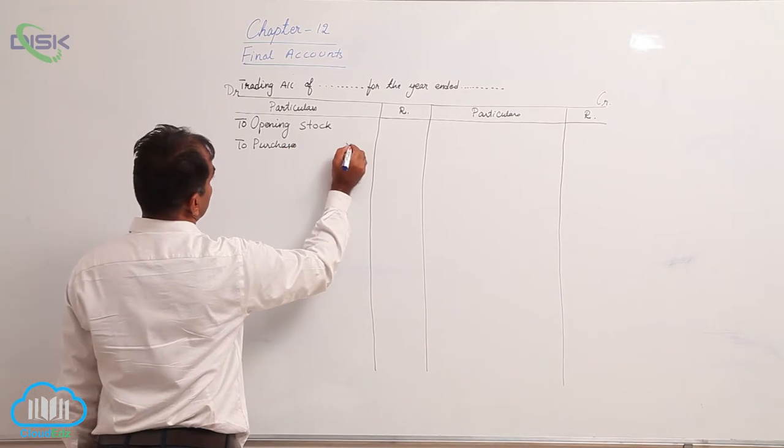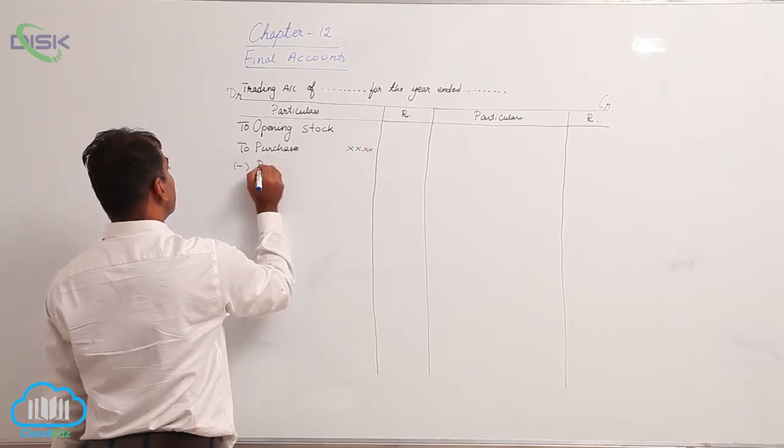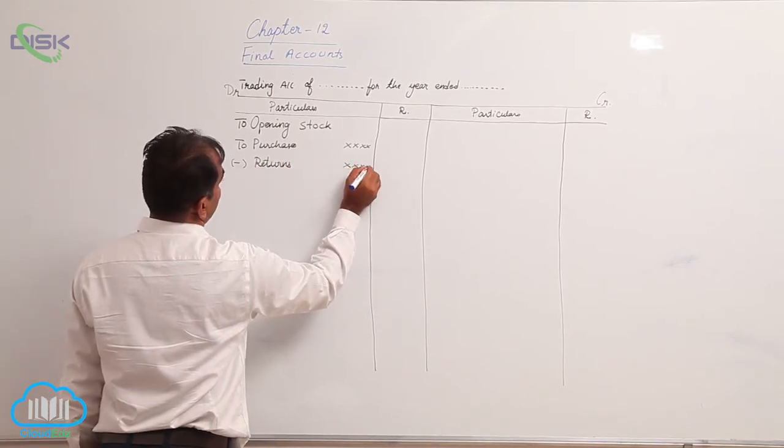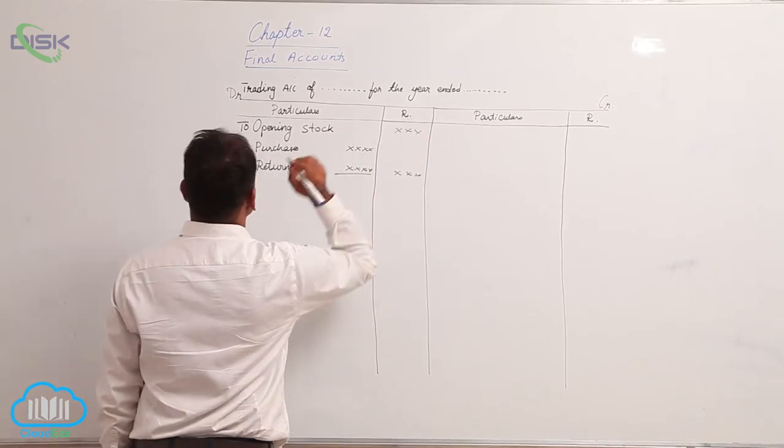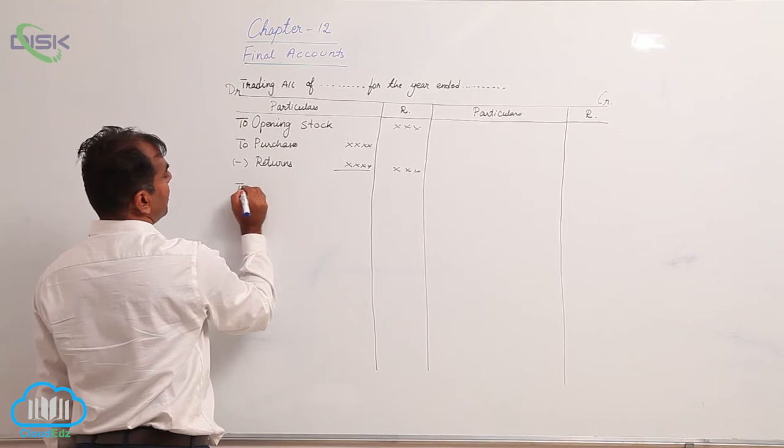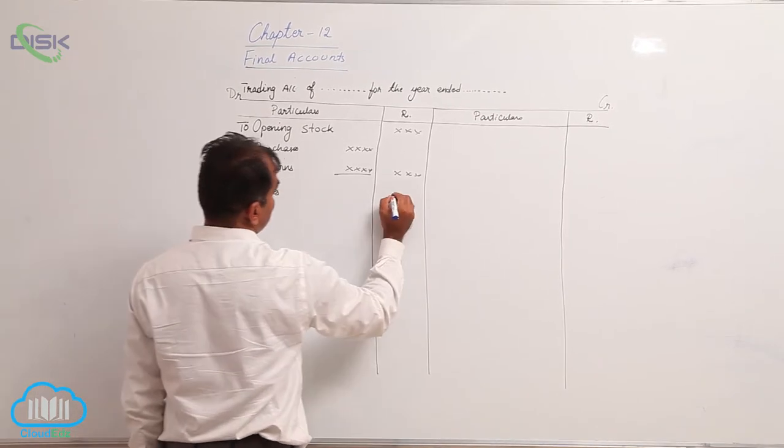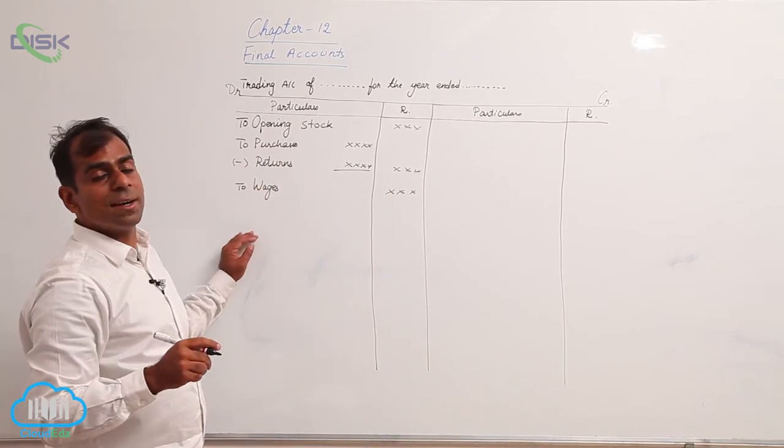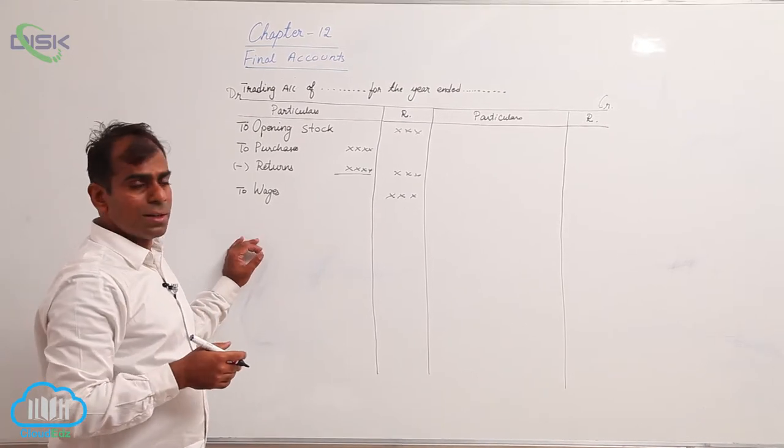Then there would be purchases. If purchases are given gross, you would be given purchase returns, so we minus purchase returns from purchases and take the value to the outer column. Next we would be having wages. Wages are the amounts paid to your workers. These workers are directly involved with processing of your goods, so it is treated as a direct expense.